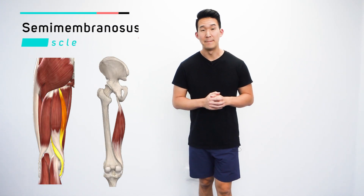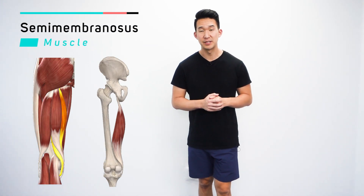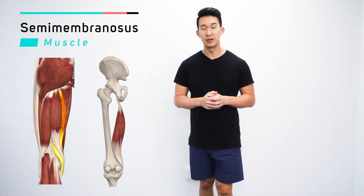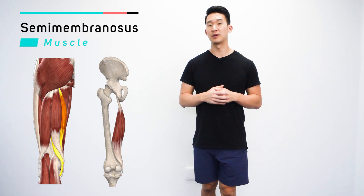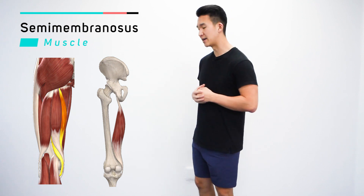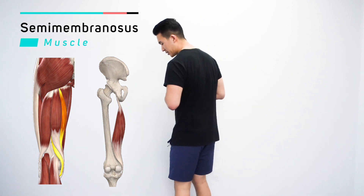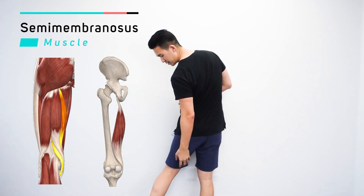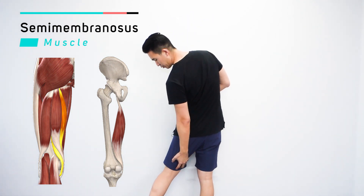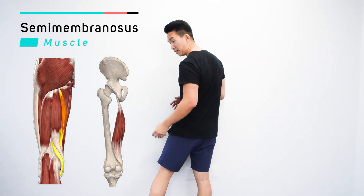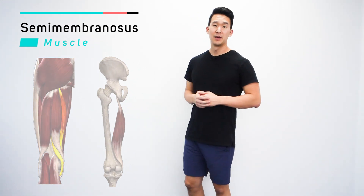This muscle is the semimembranosis and it's part of the hamstring group, so back of the leg, and we're looking at more the inner portion of the back of the leg.